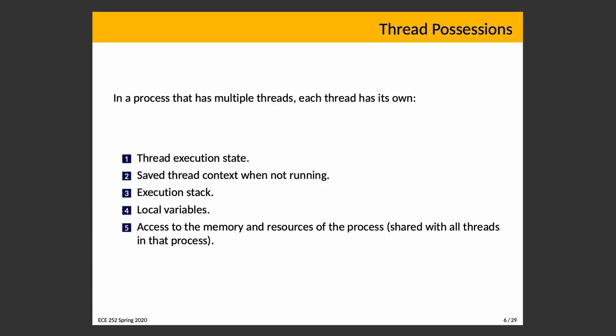In a process with more than one thread, every thread has things that belong to it alone: a thread execution state (running, ready, or blocked), saved context when not running so it can be resumed, an execution stack with function calls and stack-local variables, and local variables. All threads share access to the memory and resources of the process — any data, files, and executable code are shared between all threads.